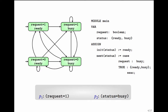Consider two Boolean expressions formed out of variables of this transition system. This expression checks if request is 1. This is true if request is 1, and false if request is 0. Let me call this Boolean expression p1. Similarly, this is another Boolean expression which says status equal to 2. This expression is true if status is busy and it is false if status is ready. Let me call this expression p2. We will call these expressions as atomic propositions.